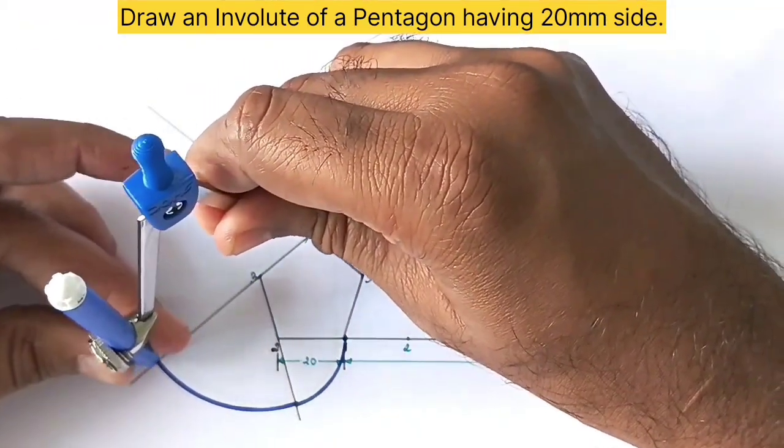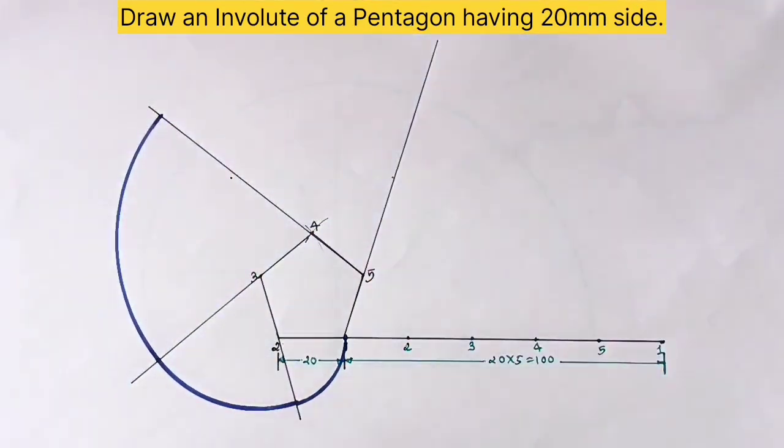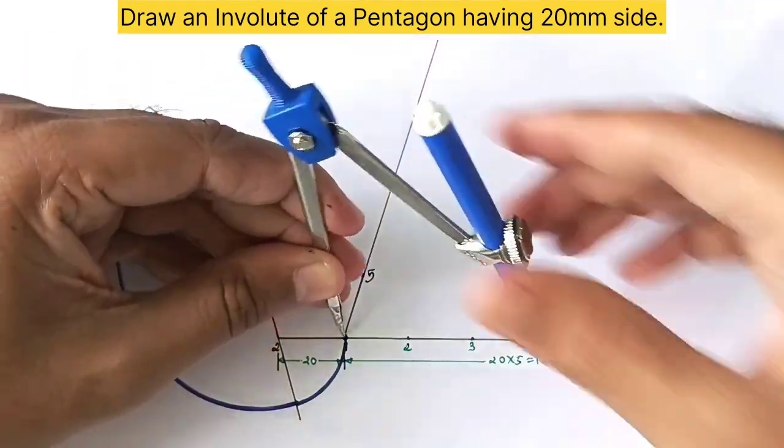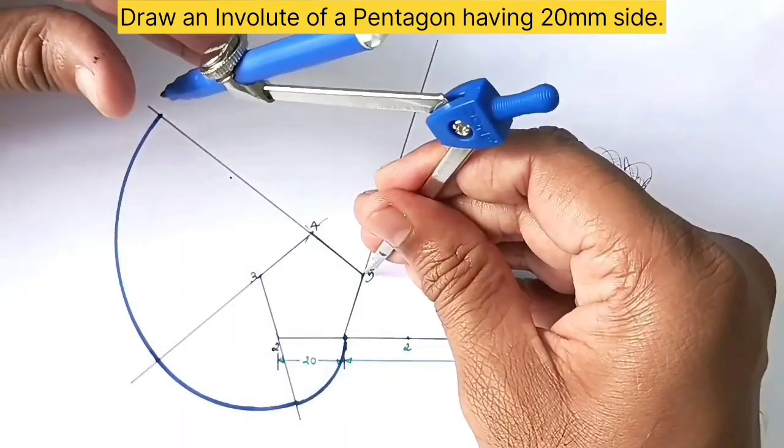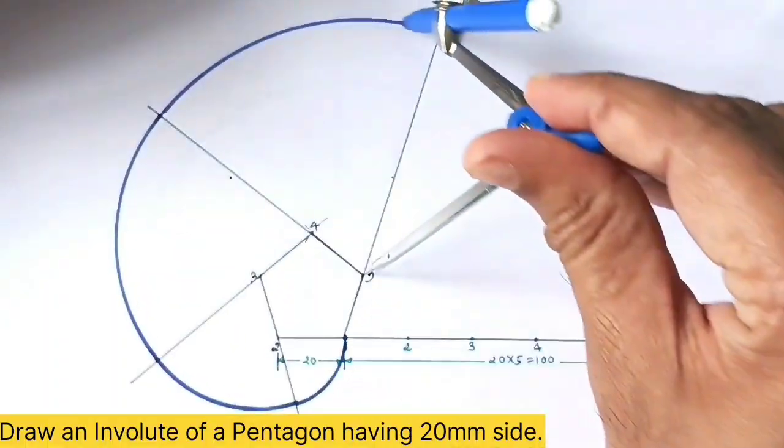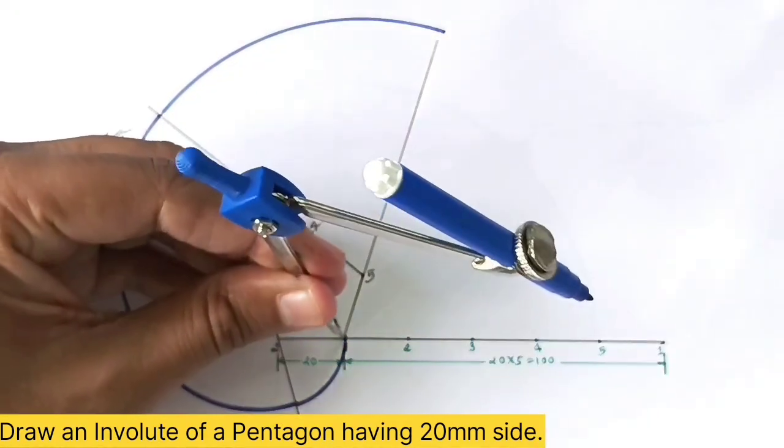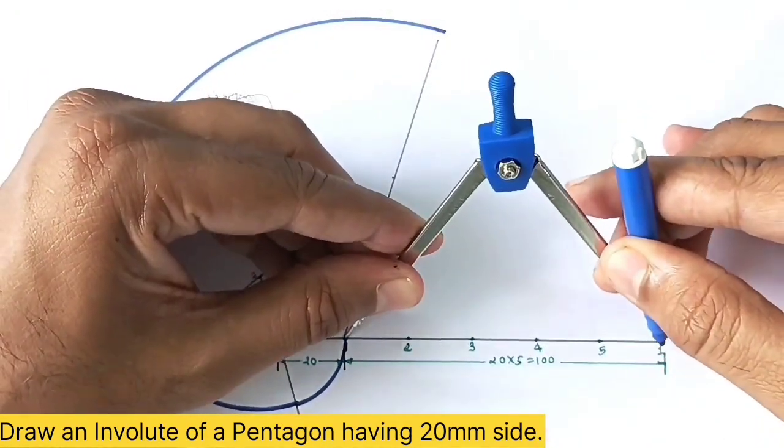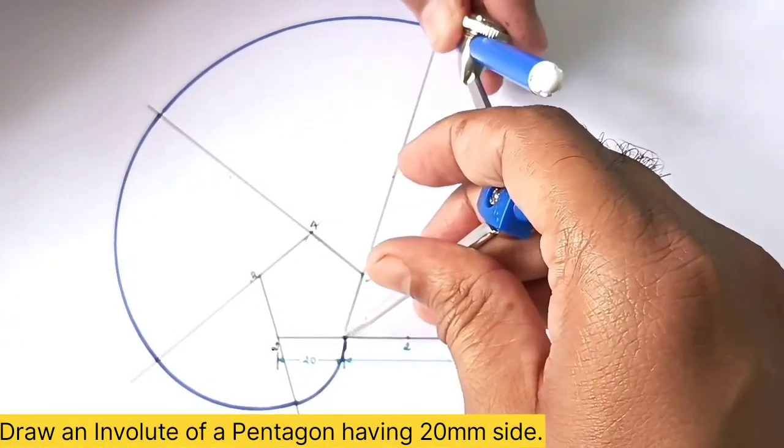Follow the same process. Adjust the length to the final length, 100 millimeters, and using point 1 as a center, draw an arc.